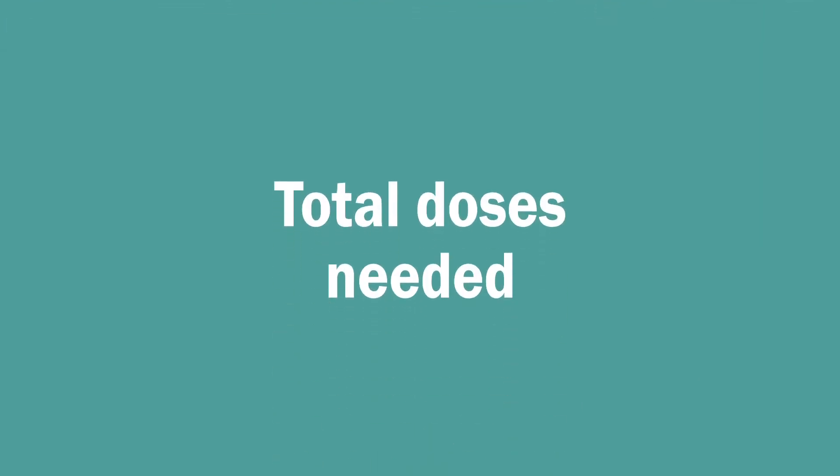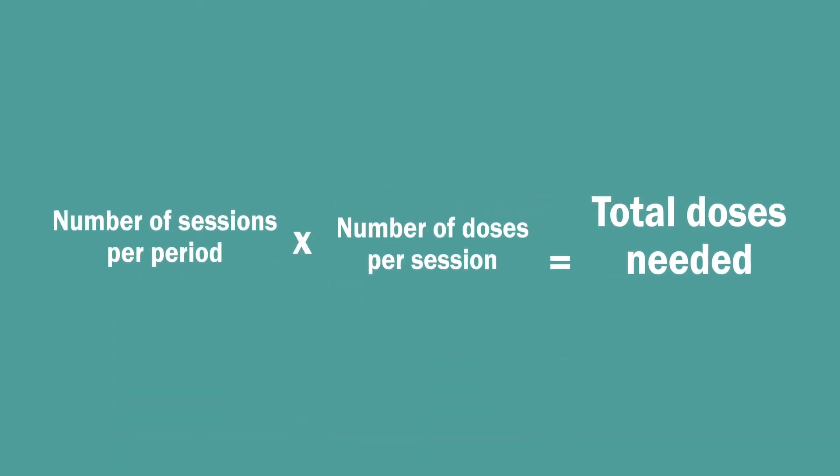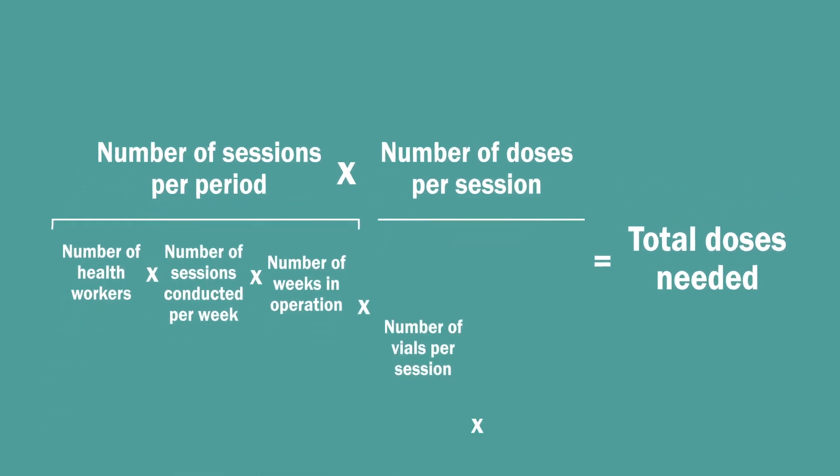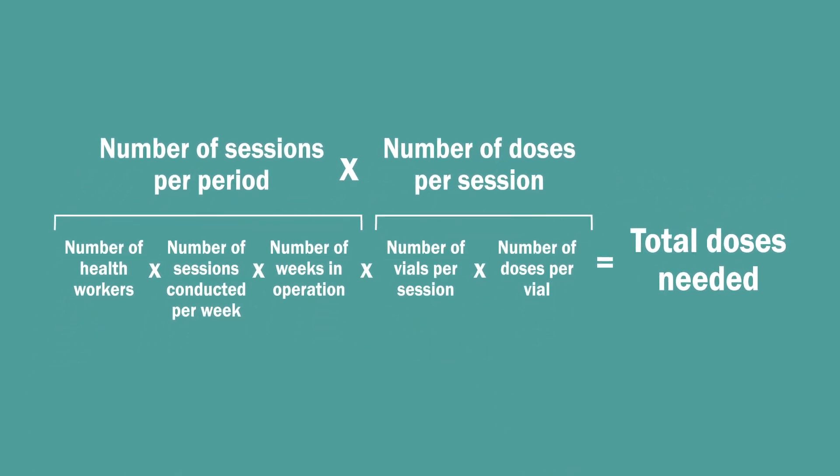At a very high level, to determine the total doses needed for a certain period, you would multiply the number of sessions to be conducted during that period by the average number of doses per session. This is one way to calculate those numbers at the health facility level.